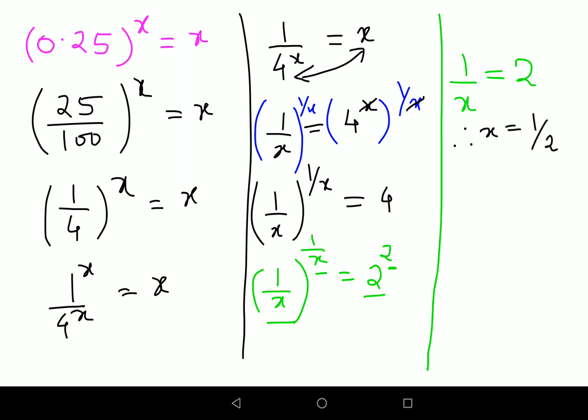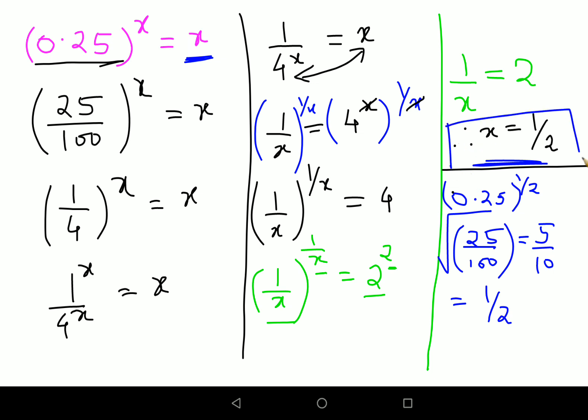Now if you want, let's verify. We'll write 0.25 the whole raised to half. This can be written as 25 upon 100, and half is nothing but putting a square root, that gets you 5 upon 10, which is eventually 1 upon 2. That is the value of x, which is also equal to x in our original question. So the value x equals to half is absolutely correct for this particular question.